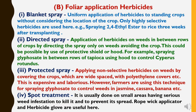Now for foliar application herbicides. The first method is blanket spray — uniform application of herbicides to existing crops without considering the location of the crop. Only highly selective herbicides are used here, like spraying 2,4-D ethyl ester on rice crop after 3 weeks of transplanting. The second method is directed spray — application of herbicides on weeds between rows of crops by directing the spray only on weeds, avoiding the crop, possible by use of protective shields or hoods. For example, spraying glyphosate between rows of tapioca using a hood to control Cyperus rotundus.